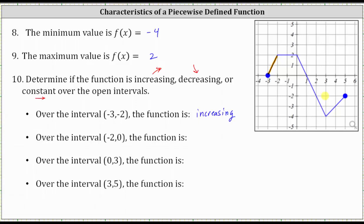Over the open interval from x equals negative 2 to x equals 0, the graph is horizontal over this interval, and therefore the function is constant over this interval.